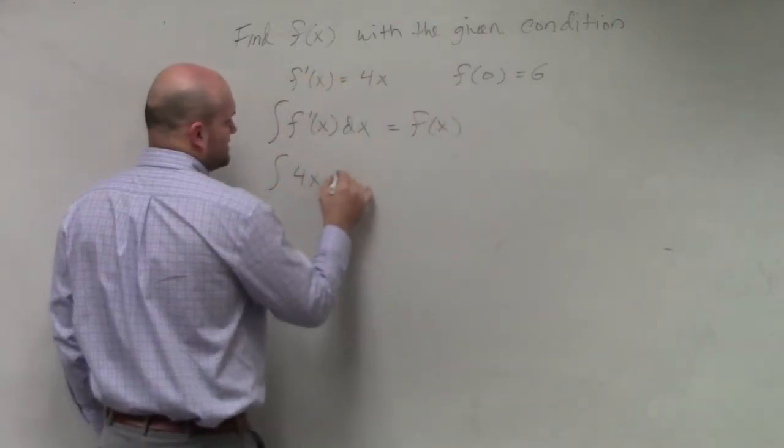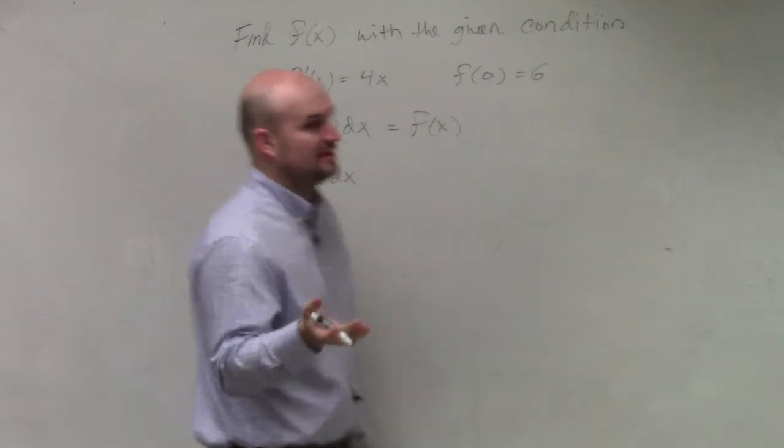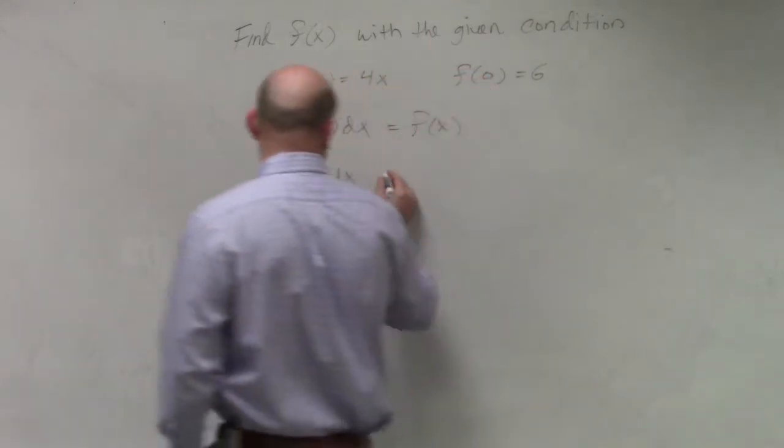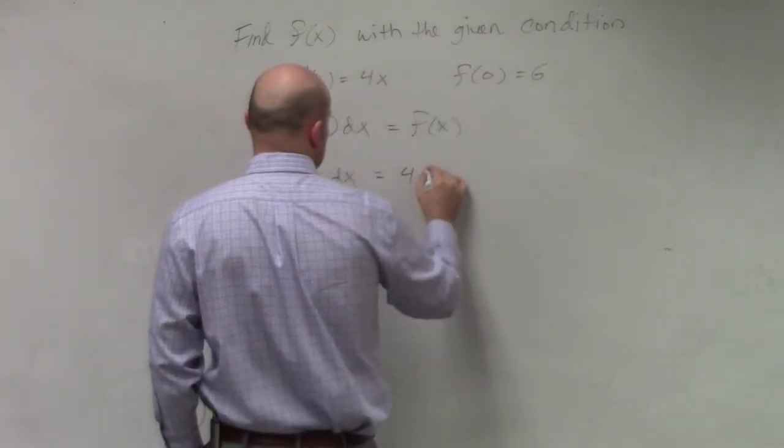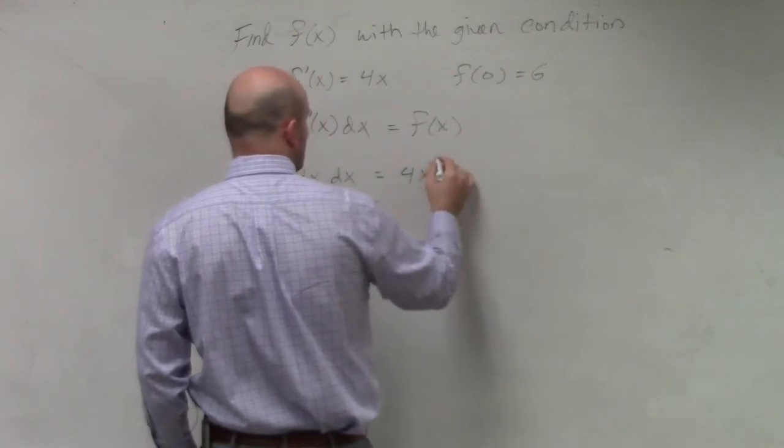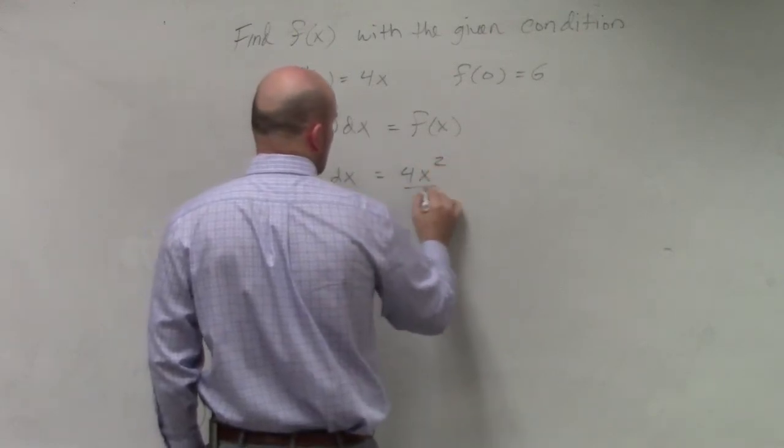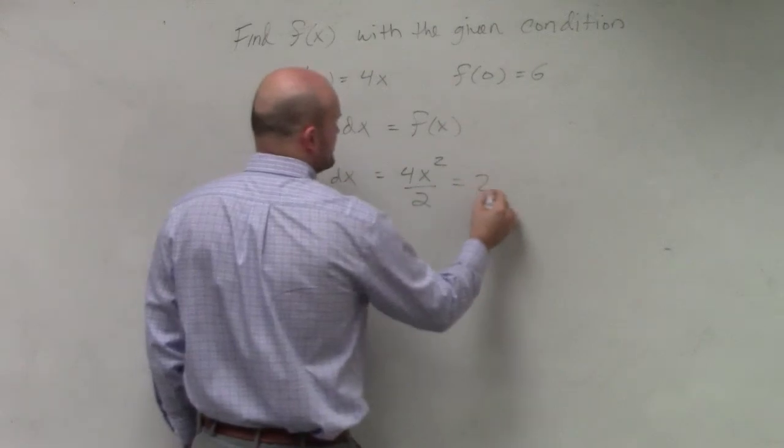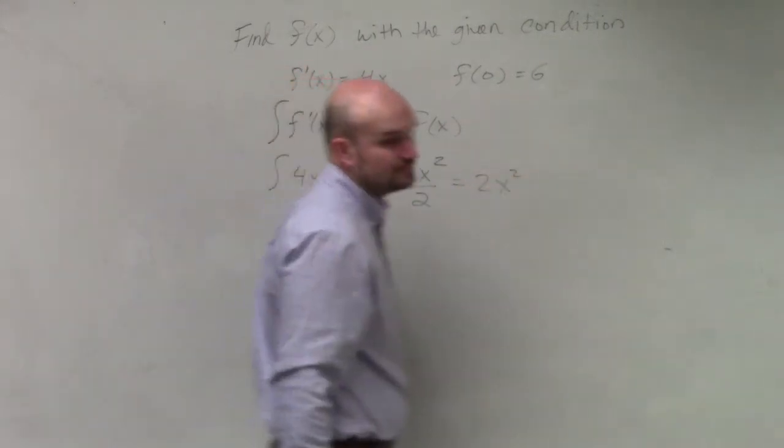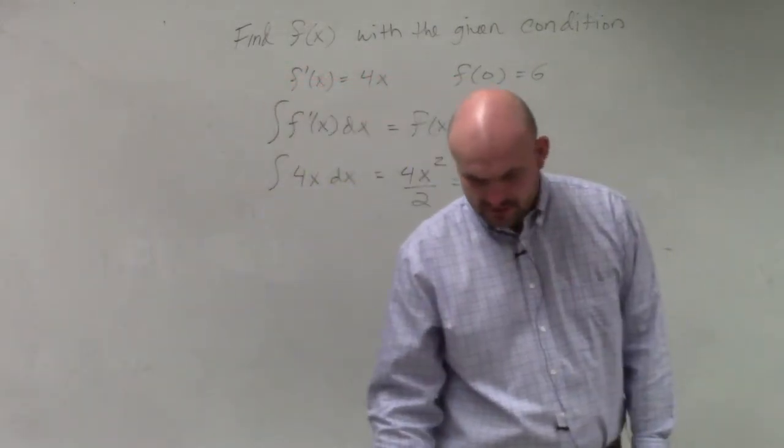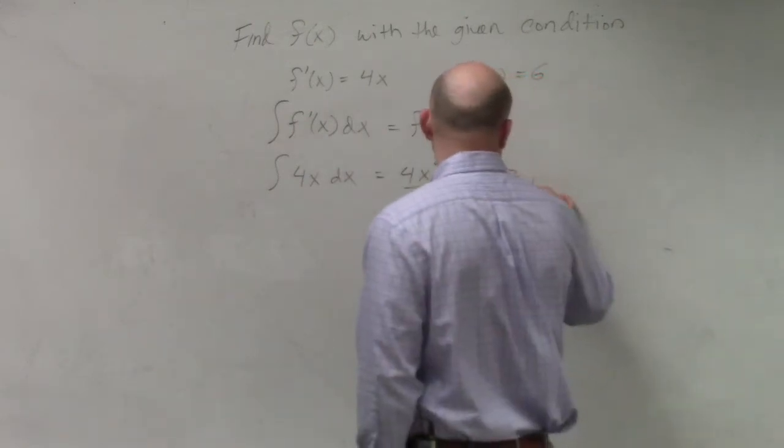So, we integrate 4x dx, and remember in this example, what we basically have is that's going to be 4x to the x plus 1 divided by 2, which equals 2x squared. Oh, I'm sorry, plus c.